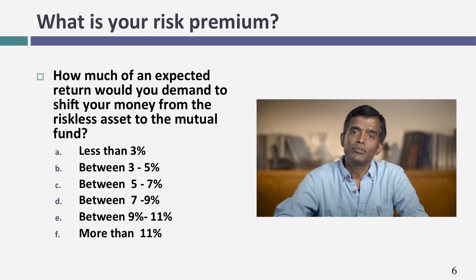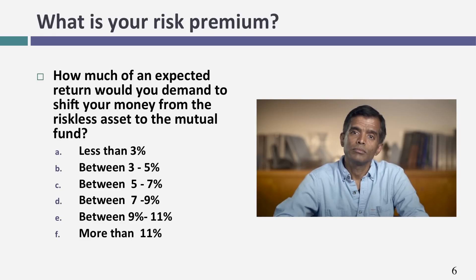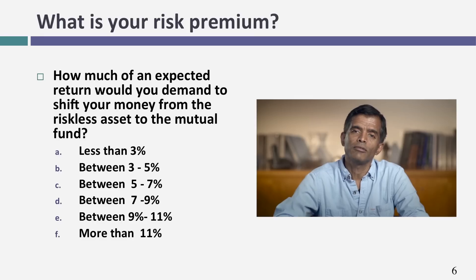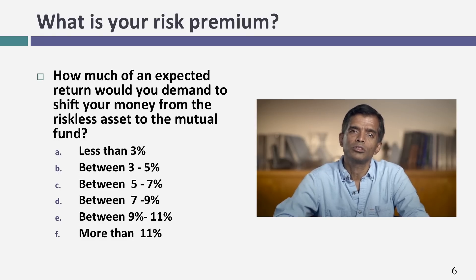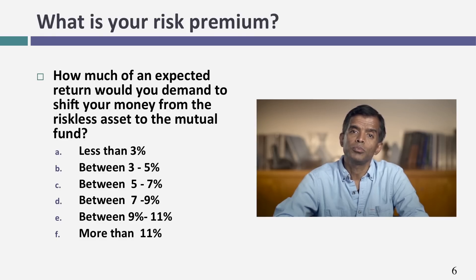The next choice is 5% to 7%, meaning a risk premium of 2% to 4% — a little less risk-averse than the previous group, but still fairly low risk aversion. 7% to 9% puts you actually in the middle of the distribution — I've done this survey on potentially thousands of investors and that's where the middle falls, a risk premium between 4% and 6%. At 9% to 11% you're getting more risk-averse, and above 11% you're probably among the most risk-averse people in this group.